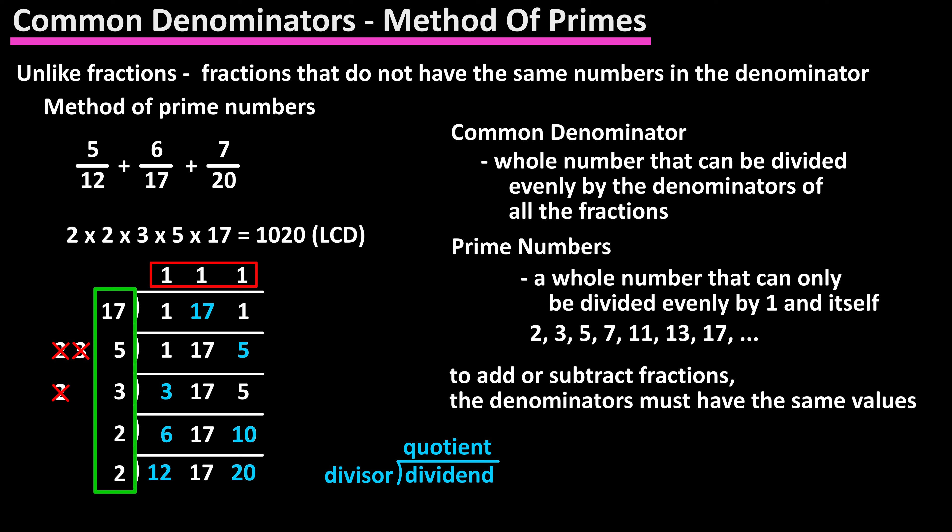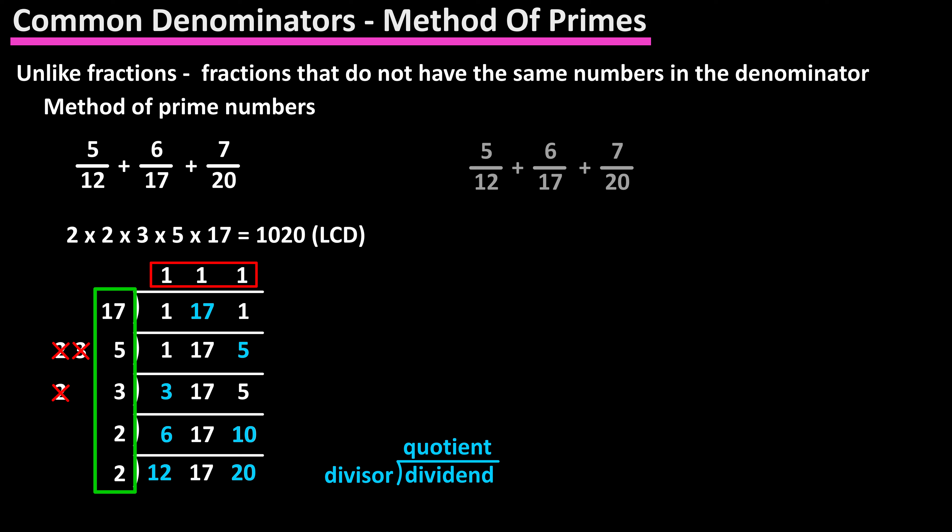And this is what we are looking for — all ones in the top row as the quotients. So next we are going to take all the divisors we have on the left and multiply them: 2 times 2 times 3 times 5 times 17, which gives us our least common denominator of 1,020.